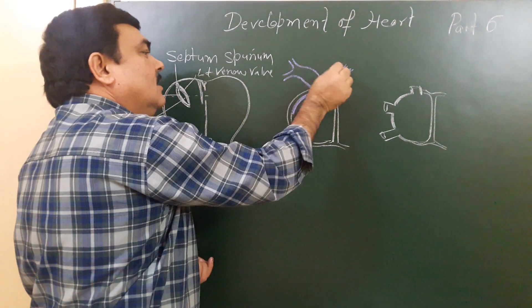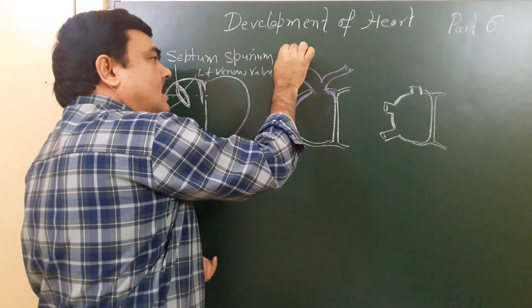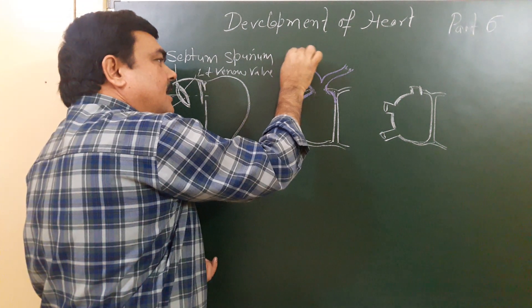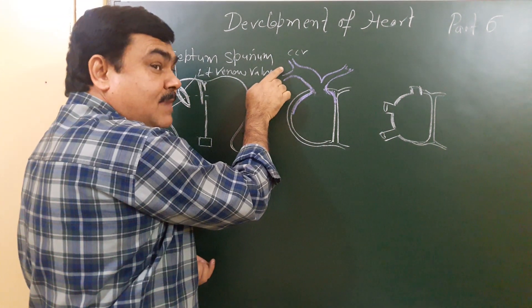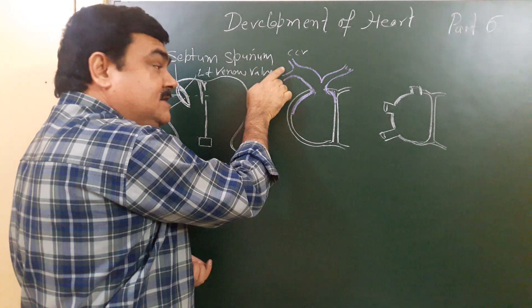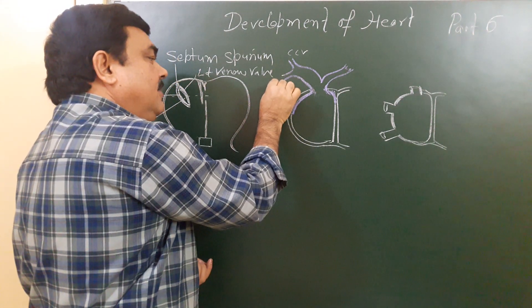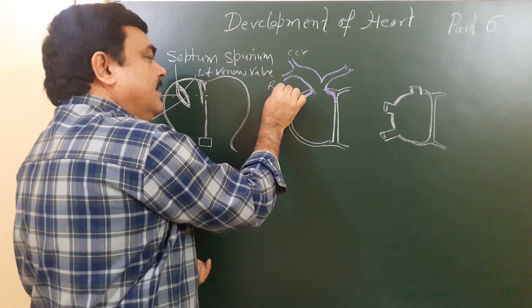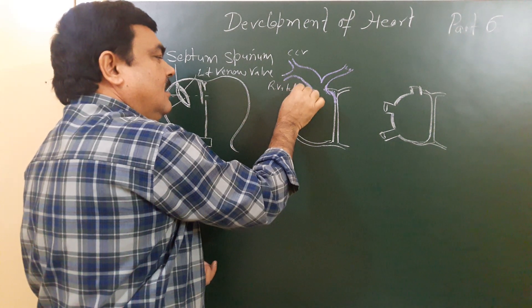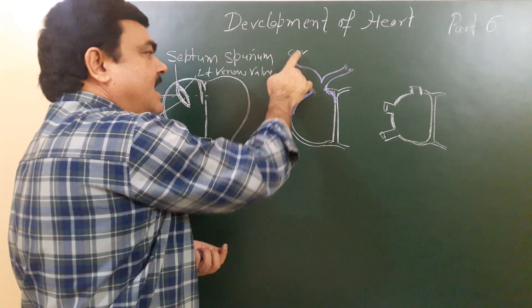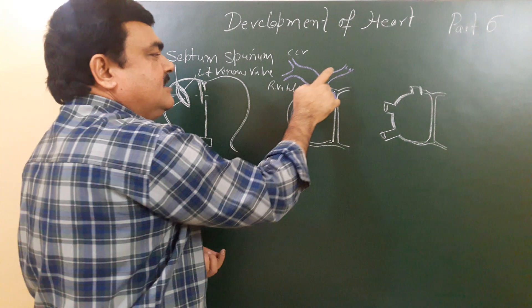These three openings: one, two, three. The left horn is converted into the coronary sinus. The right horn receives the right common cardinal vein; the right umbilical vein disappears, and the right vitelline vein remains.